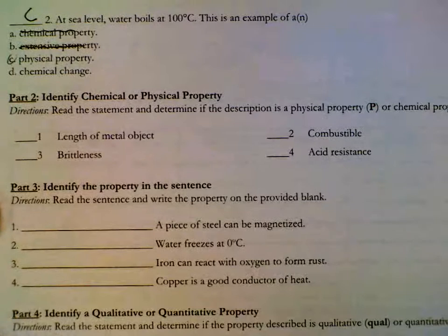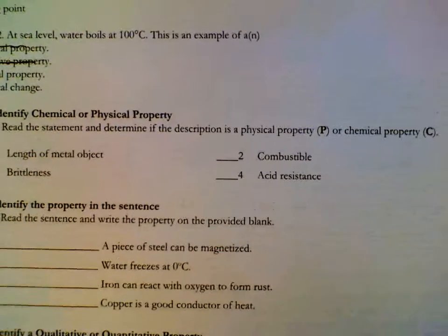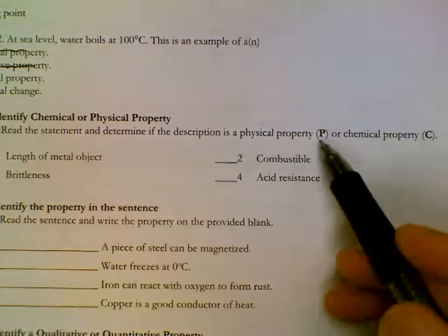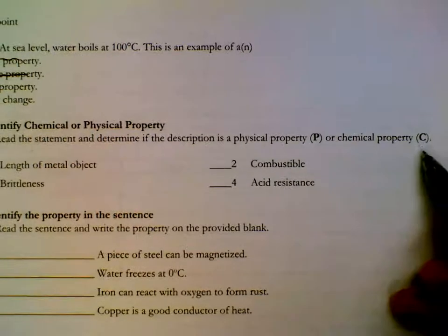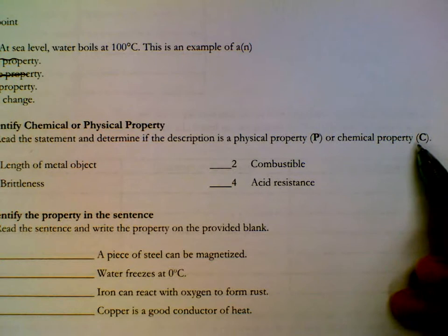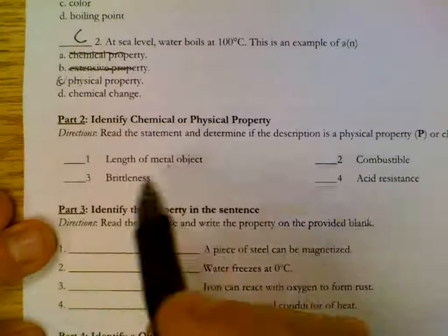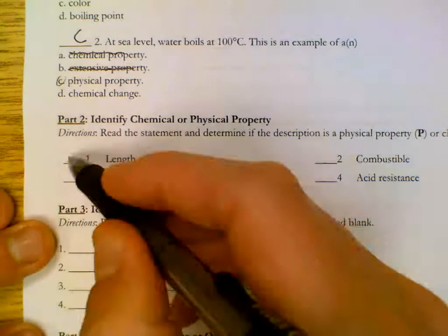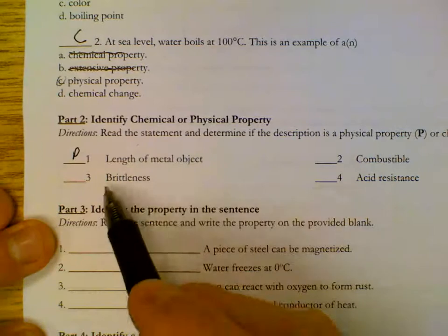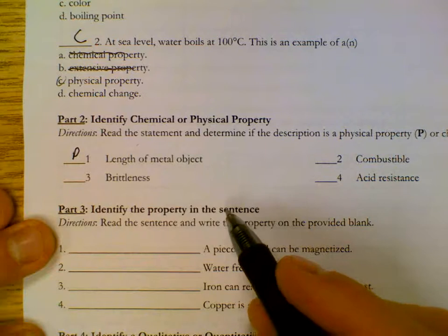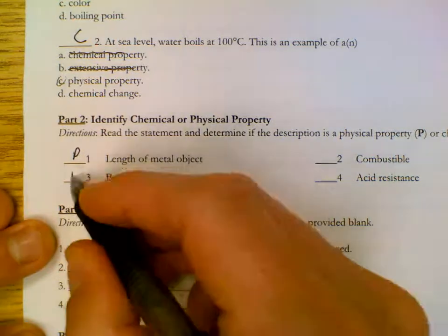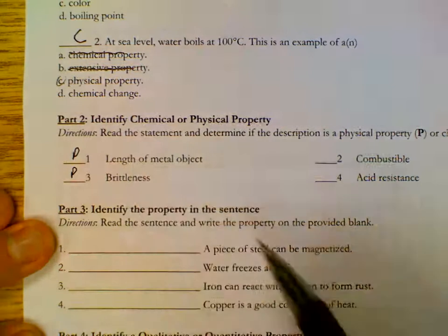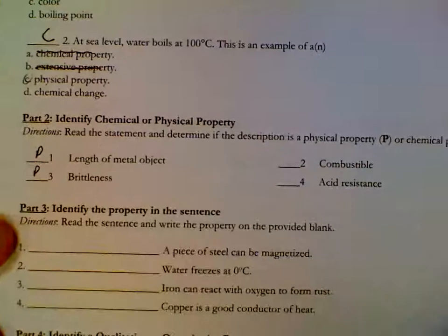Determine if each is a physical or a chemical property. Physical is something that can easily be sensed. Chemical is talking about how a substance can or can't react, or any word that means react. So length is easily measured with a ruler, which makes this a physical property. Brittleness is describing how easy something is to break, which would be physical. Neither of these discuss how a substance can or can't react.